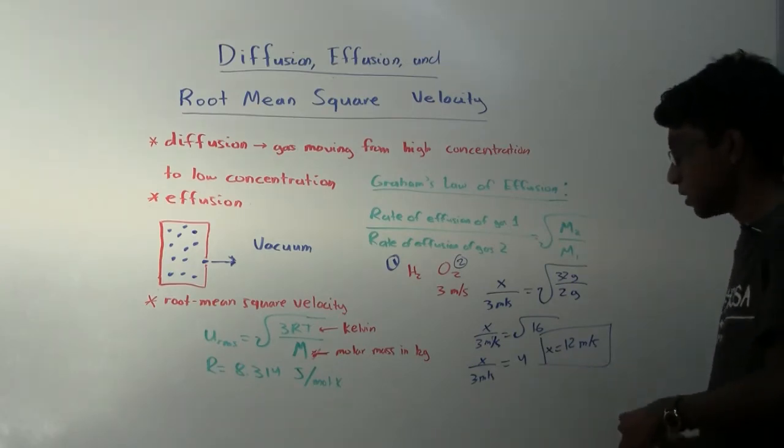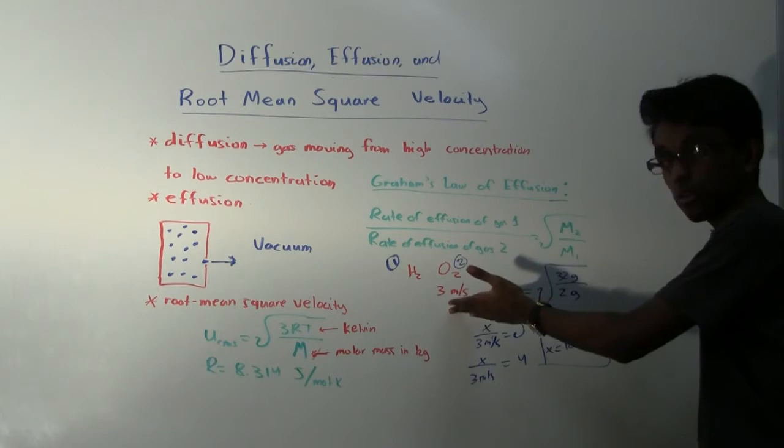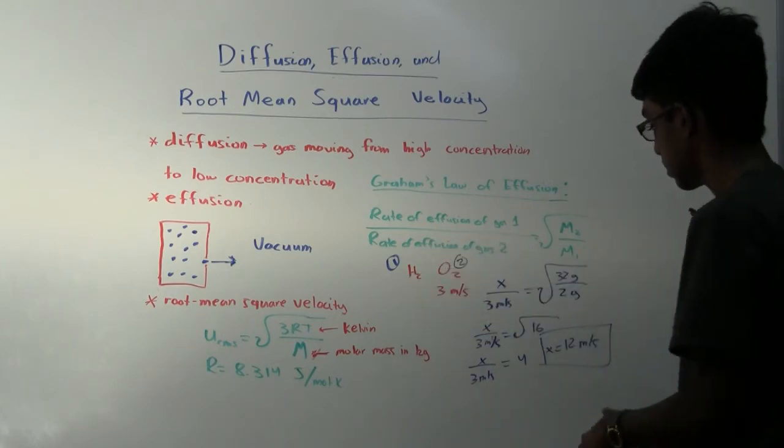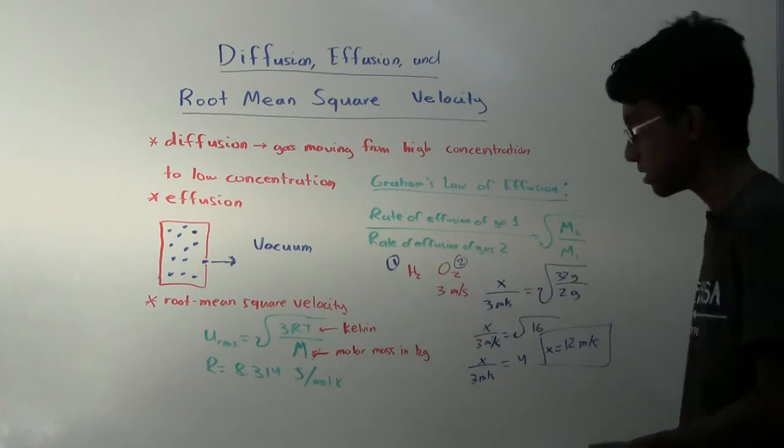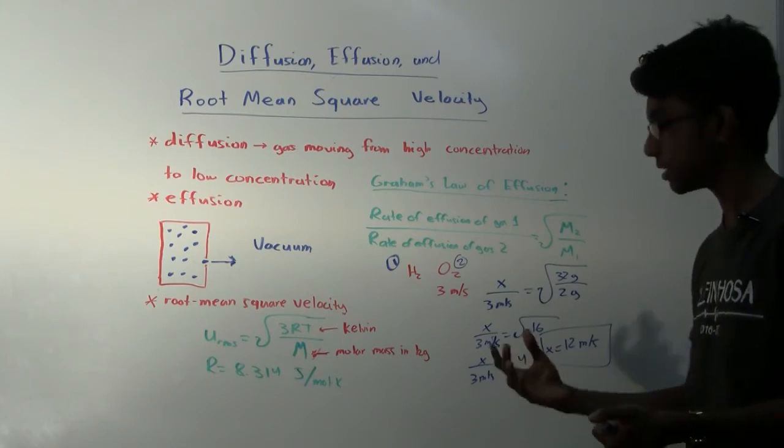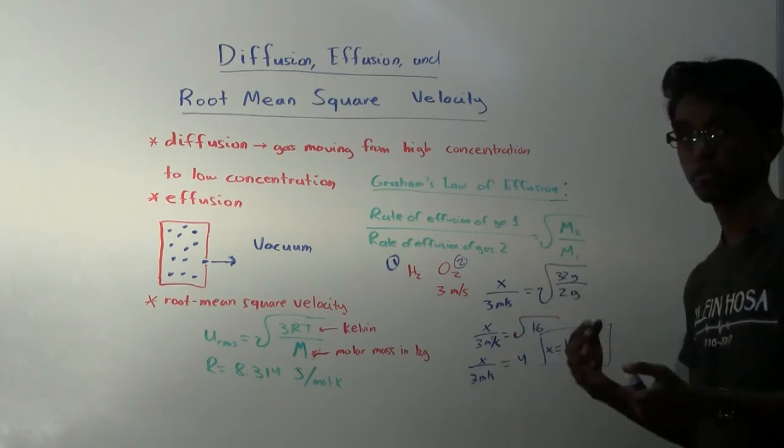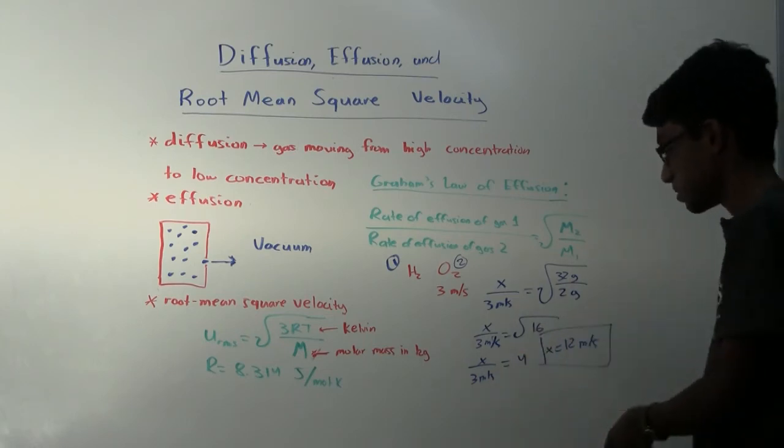And this makes sense, right, that this number is bigger than the rate of effusion for oxygen because hydrogen is a less massive gas. So that's a good way of checking your answer. Just look at the two gases and make sure the answer makes sense. The least massive gas, the one that's smaller in molar mass, should obviously travel faster than the one that has more mass. So our answer makes sense.